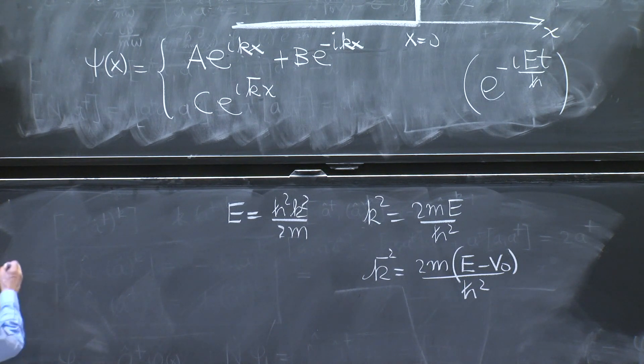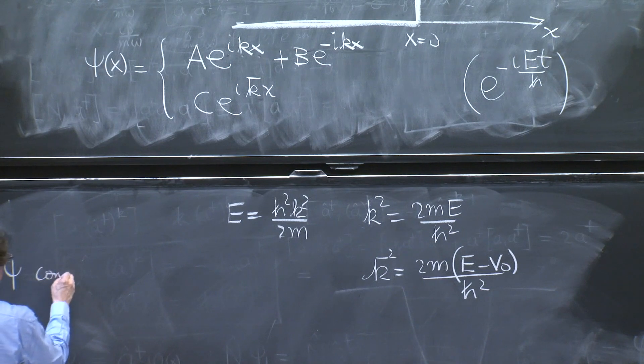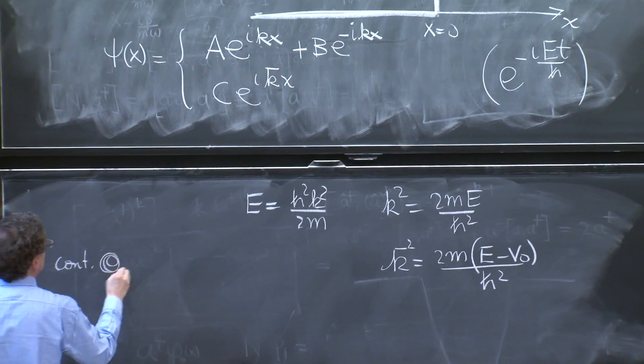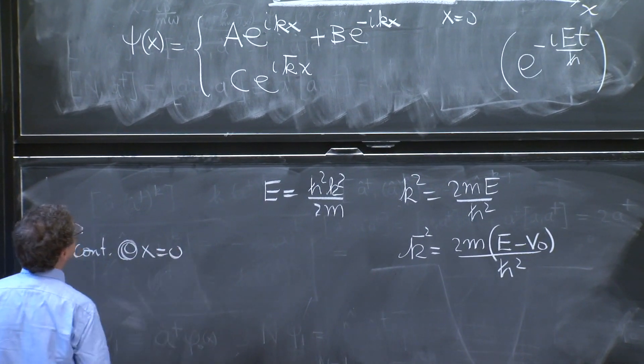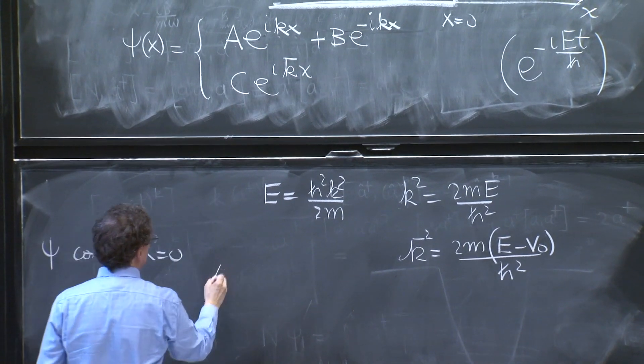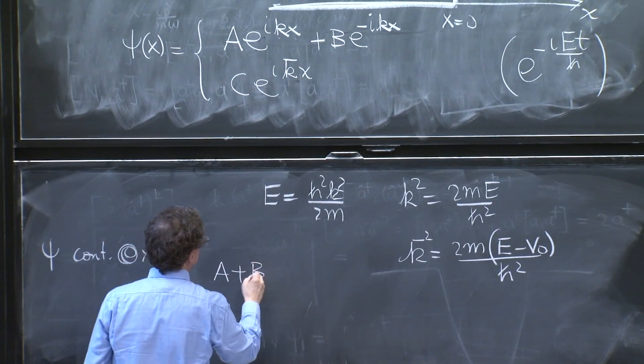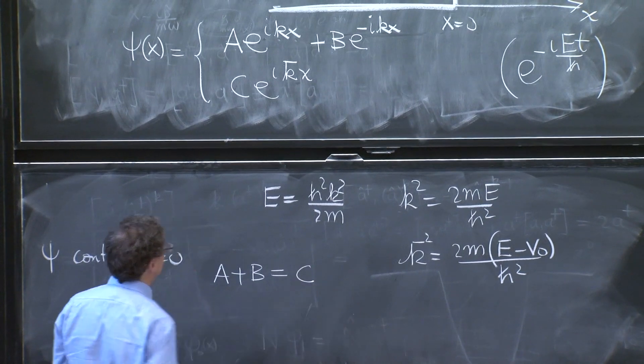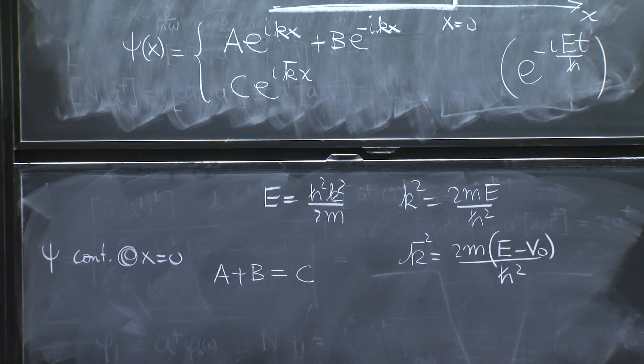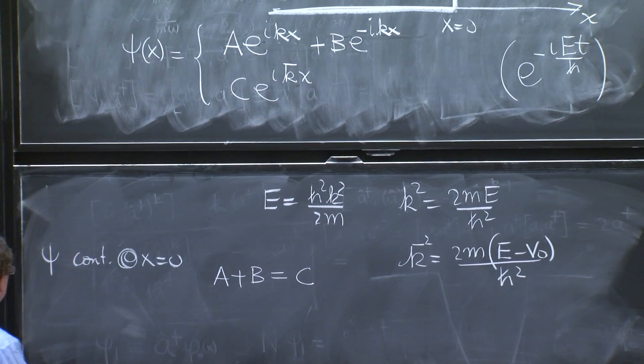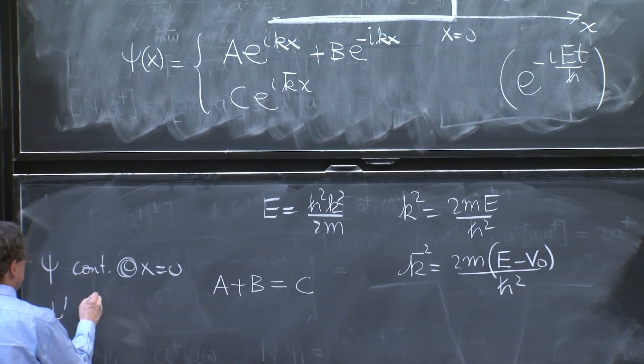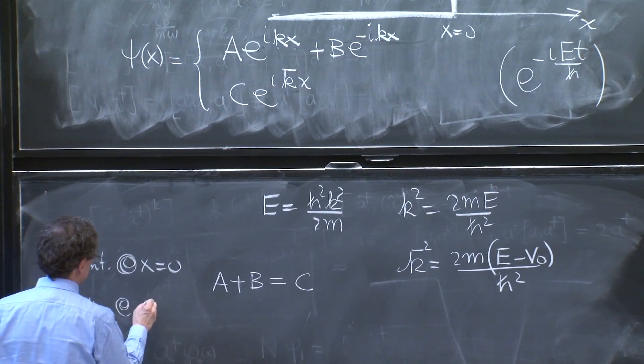And the wave function must be continuous at x equals 0. That gives you a plus b equal to c. At 0, the exponentials vanish. And the derivative must be continuous at x equals 0.